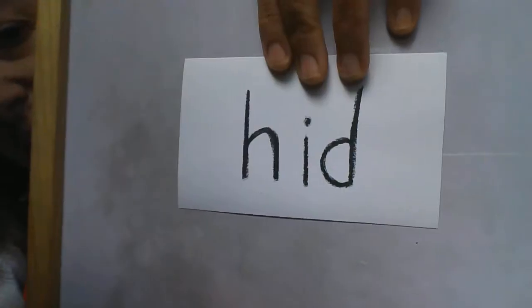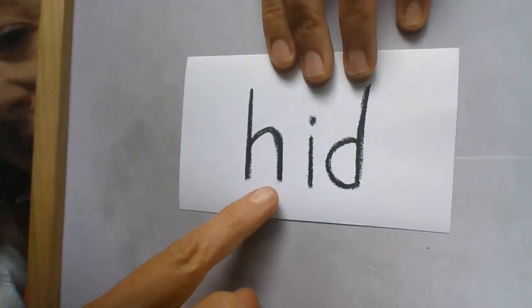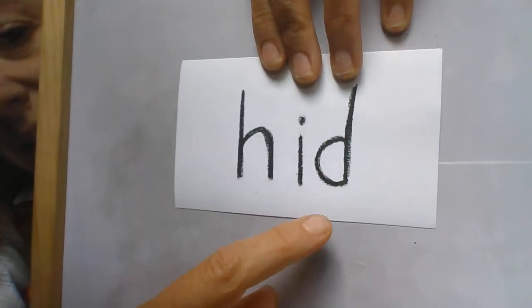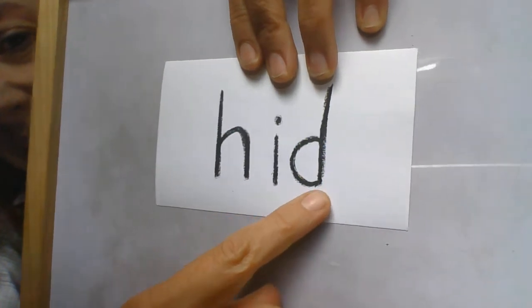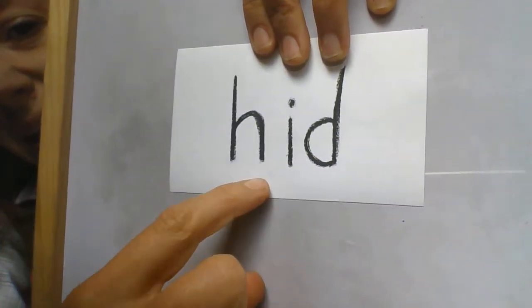All right, good job. We have one more. Let's sound out these letters. H, i, d. What's the word? Hid. What's the word? Hid.